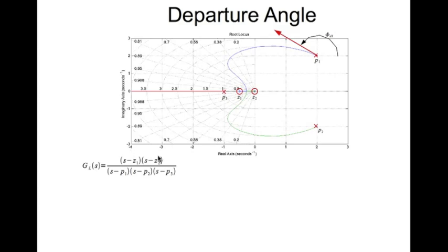So you can write the loop transfer function like so. Now let's consider point S0 that lies in the root locus. If it lies in the root locus then it satisfies the characteristic equation and therefore you can write this equation.